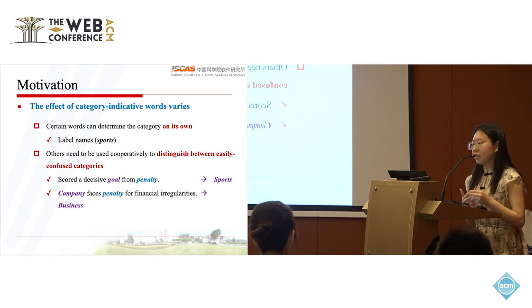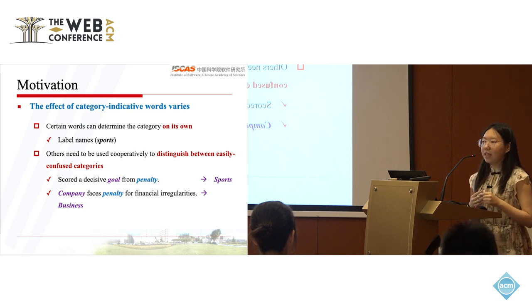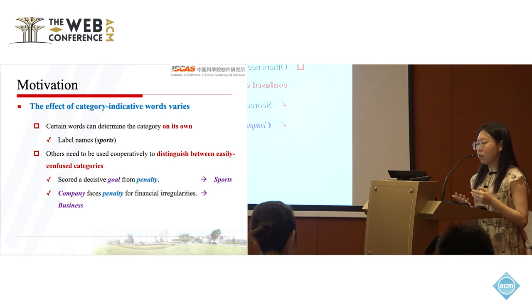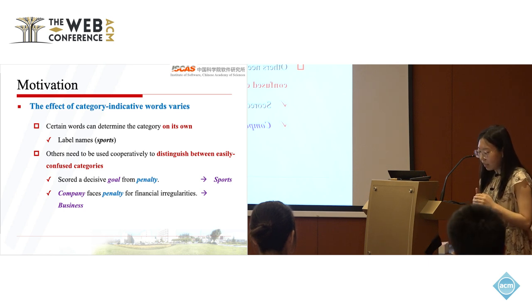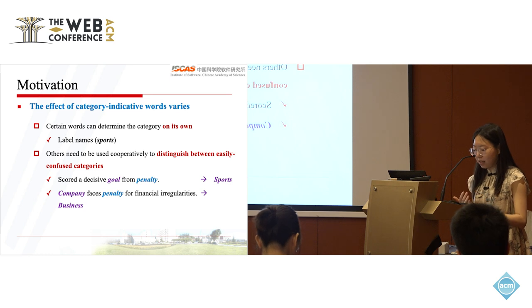However, they all fail to differentiate the effect of category-indicated words. That is, certain words can determine the category on its own, like the label names, while others need to be used cooperatively to distinguish between easily confused categories. For example, the word penalty itself cannot signify the sports category, but when combined with the word goal, the text is likely to talk about a football match. Conversely, an additional word company would imply the business category rather than sports.